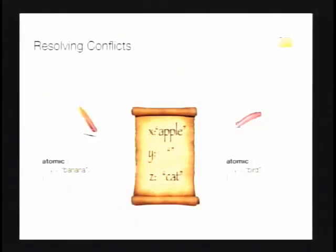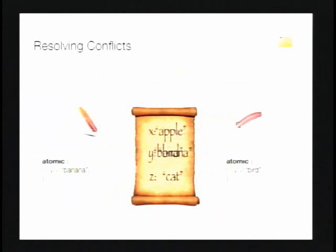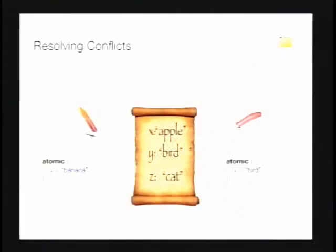Here we have two threads that are going to write the same location. We want to assume we can do this concurrently, but if we just do this without checking, we'll have garbage. It's up to the system to figure out that something bad happened and ensure we're left with a consistent result. Here we get 'Bird', which is consistent with one transaction running before the other, so we get a consistent final result.